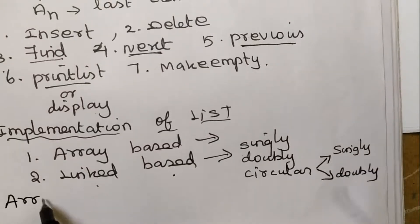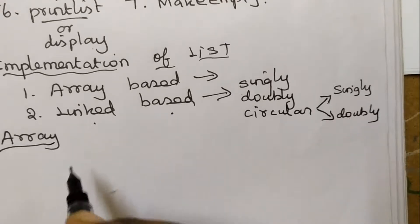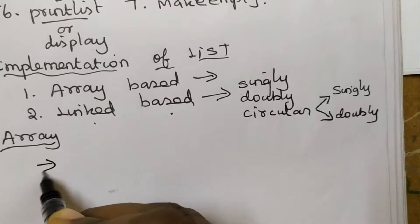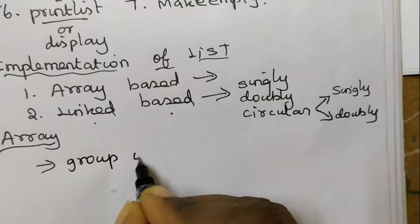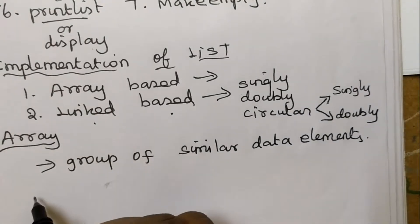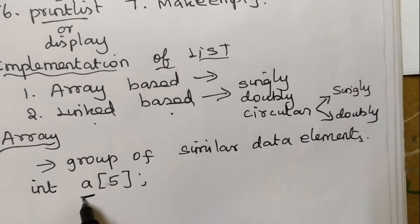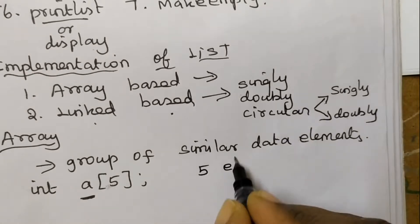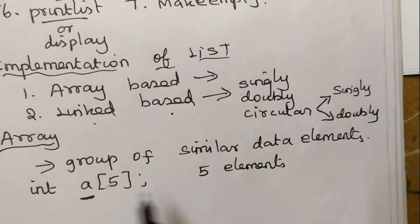We are going to see array-based implementation — how this list can be implemented. An array is a container that can hold a fixed number of items, or we can say it consists of a group of similar data elements. In C language, an array can be declared like: int a[5]. Here the array name is 'a', and we can store 5 elements total — all 5 elements must be integers.